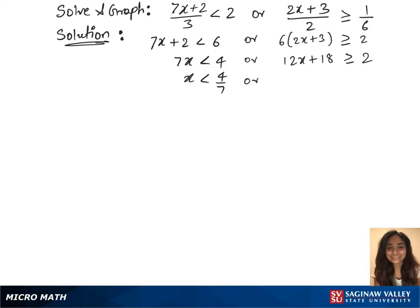And in our next step, we have 12x greater than or equals to minus 16. Now we divide 12 on both sides, which gives us x greater than or equals to minus 4 over 3.